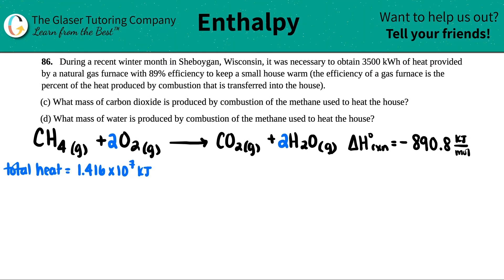Number 86. During recent winter month in Sheboygan, Wisconsin, it was necessary to obtain 3,500 kilowatt hours of heat provided by a natural gas furnace with an 89% efficiency to keep a small house warm.